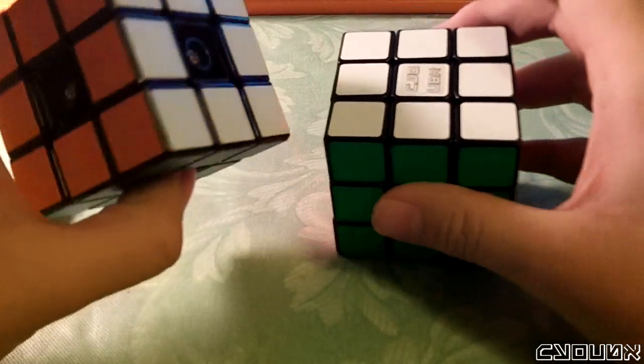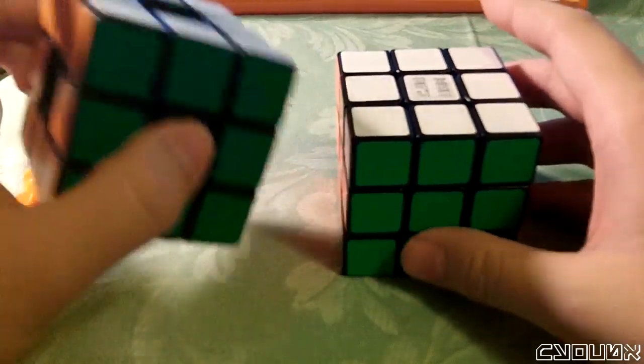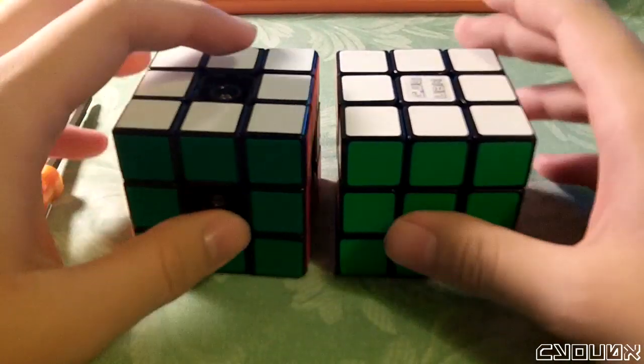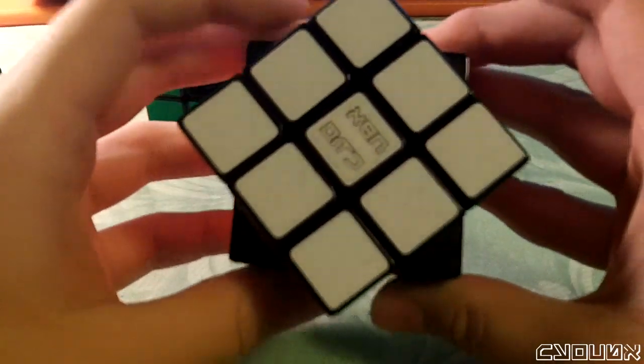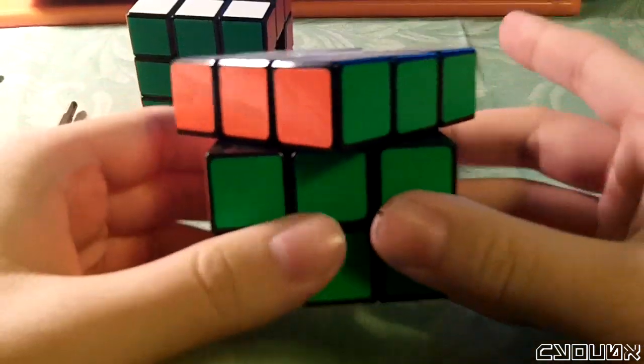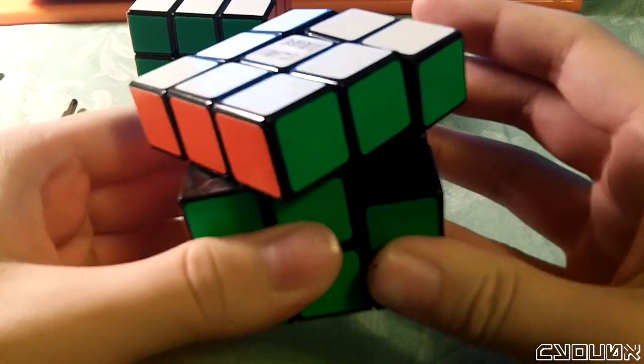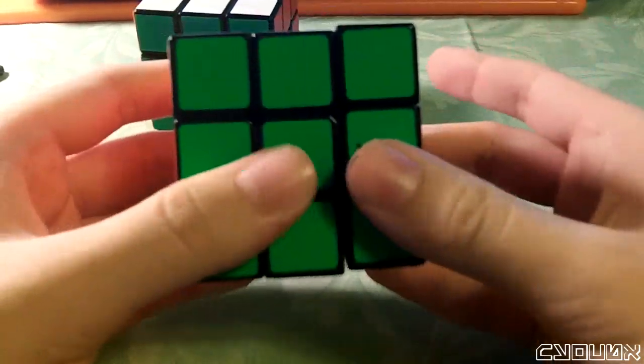This does exclude the Daian 1 because that uses a different mechanism than the later Daian cubes which have sort of a Guhong-type structure. Basically what this will do is make sure that your Daian cubes can cut at least 45 degrees, and that's what you should expect, is a 45 degree corner cut.